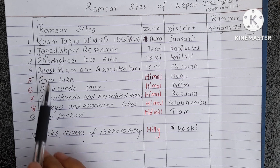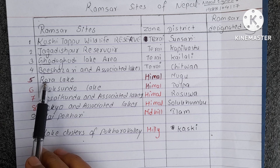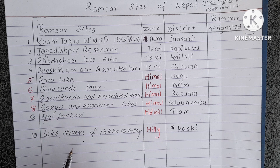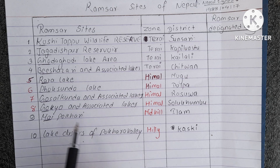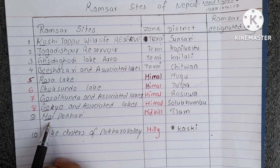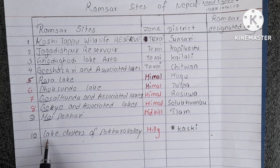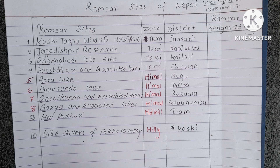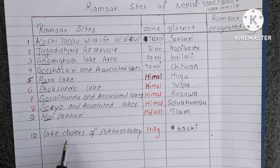The trick line to remember the Ramsar Sites is: 'Ko jago beach raati fogatma.' By remembering this one line, you can recall all the sites in serial order. The last one, Lake Cluster of Pokhara Valley (number 10), is easy to remember on its own.